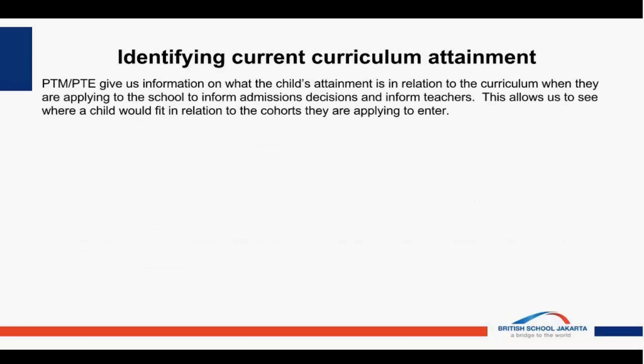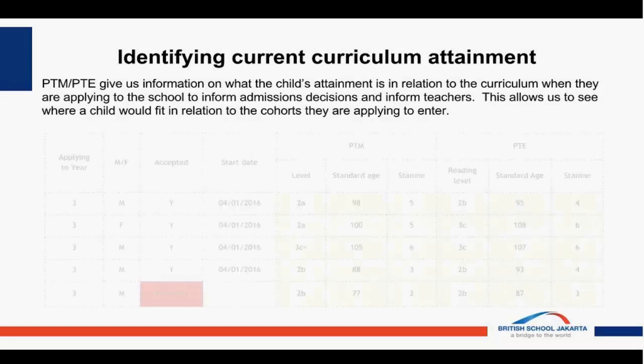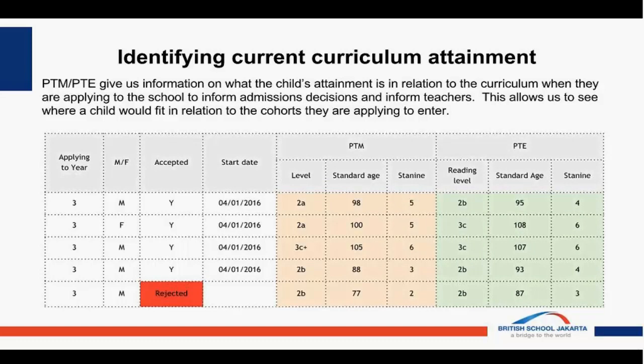We also use the PTE and PTM — the Progress Test in English reading and maths — to look at where children are on entry against our curriculum attainment, comparing them to our year group. If children have lower scores, that flags a secondary assessment from individual needs or EAL to see whether we can support those needs. The vast majority of the time we take in the children, but occasionally we are unable to support their needs, so this forms a criteria we use to help with our admissions assessment on entry.